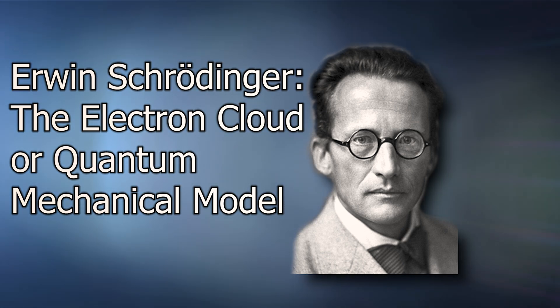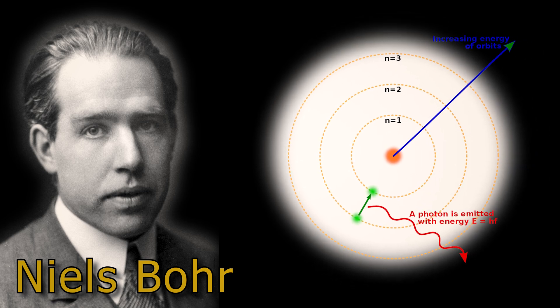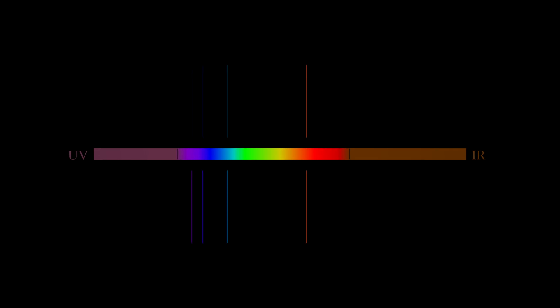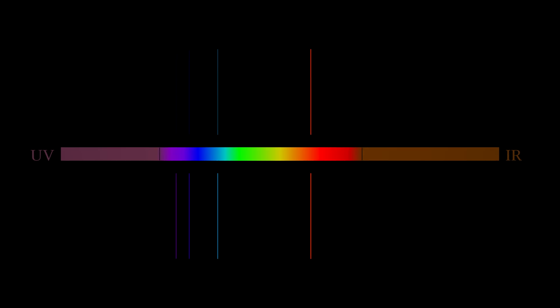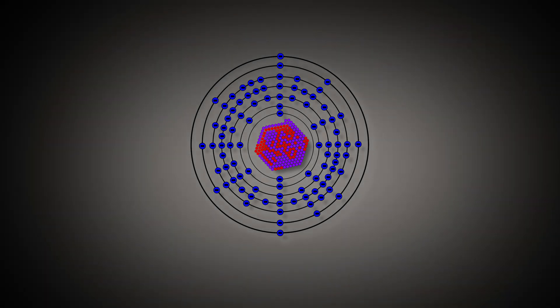Bohr's model addressed the inadequacies of earlier models by incorporating quantized energy levels, explaining the discrete spectral lines observed in hydrogen emission spectra. However, a notable limitation of the model surfaced as it struggled to accurately predict the behavior of atoms beyond hydrogen, especially in their emission spectra.